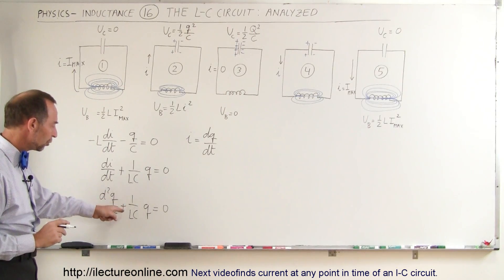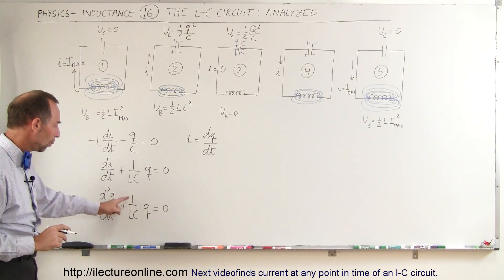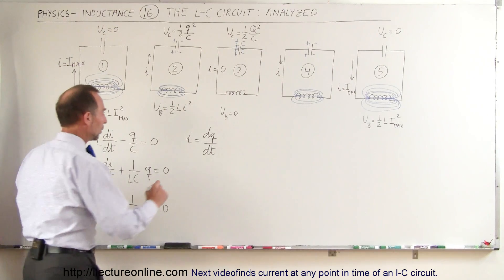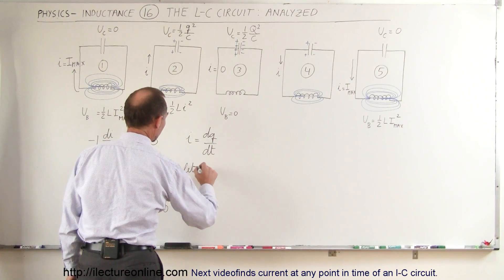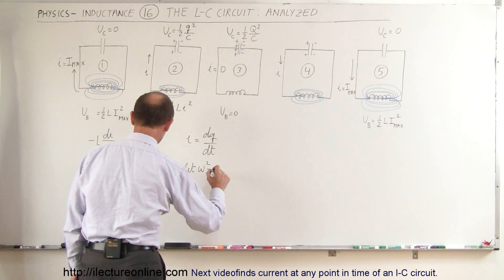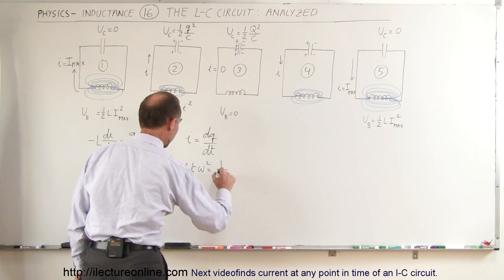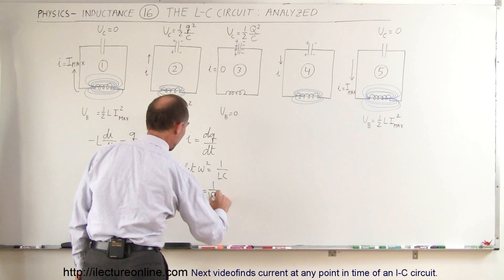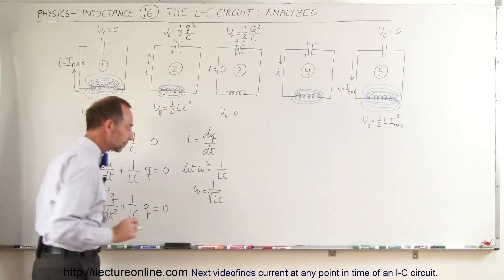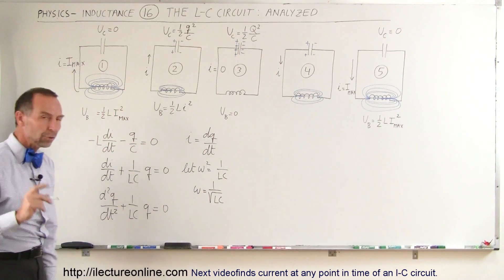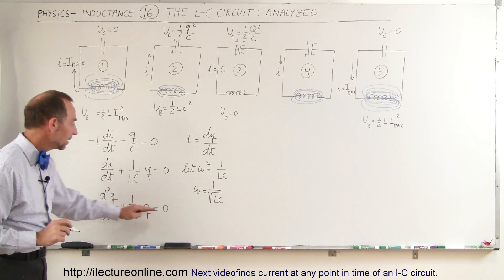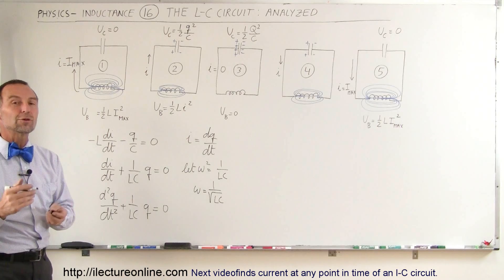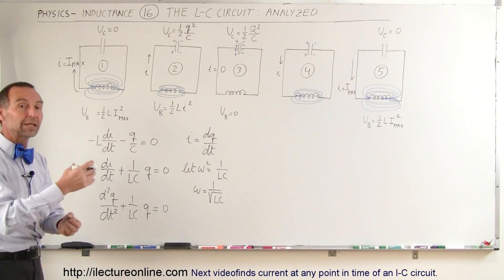We're going to make one more change: write 1 over LC as ω squared. So we let ω² equal 1 over LC, which means ω equals 1 over the square root of L times C. The reason we do that is when we look at this equation, we realize it looks a lot like the equation used for simple harmonic motion with a spring and a mass.